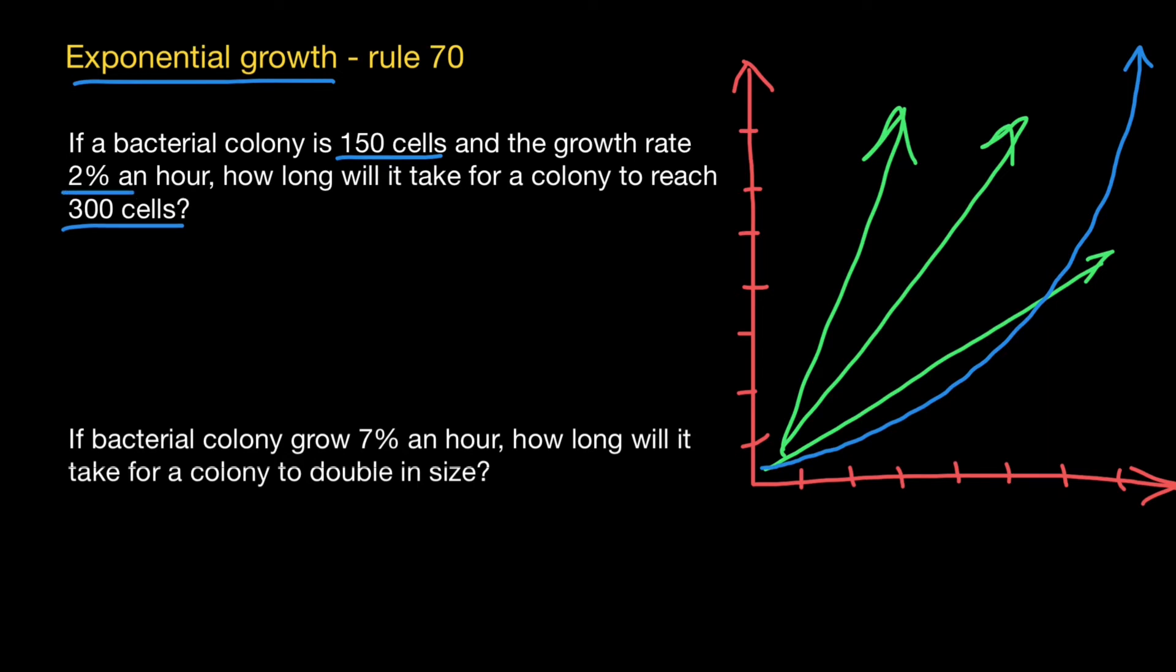We are going to use rule 70 in order to solve this problem. Take a look how easy it is. So we just have to divide 70 by the growth rate, which is 2%, so divide by two. And the answer is going to be 35 hours. This is how simple it is.